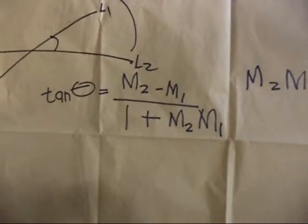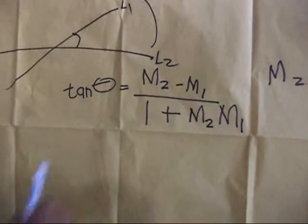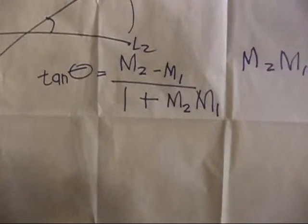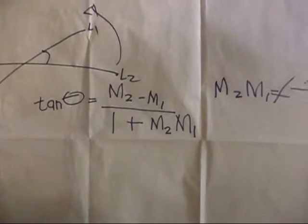Here's the proof. Let line 1 and line 2 be two intersecting non-vertical lines with inclinations theta 1 and theta 2, with slopes M1 and M2 respectively.